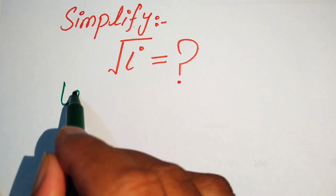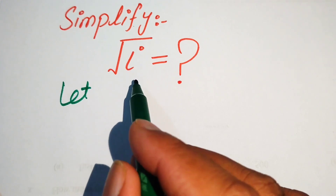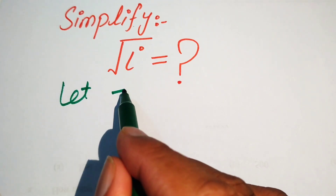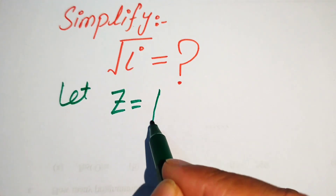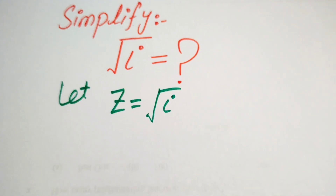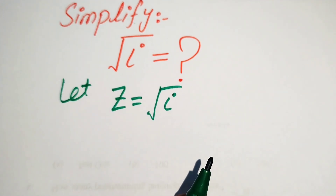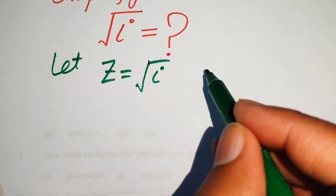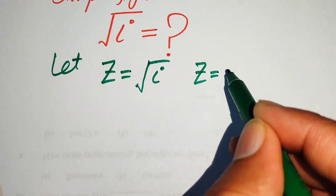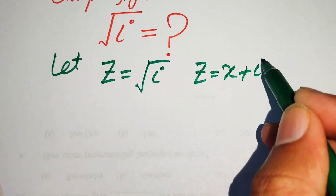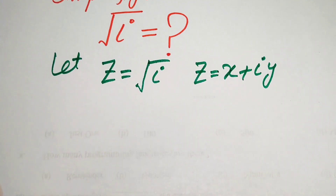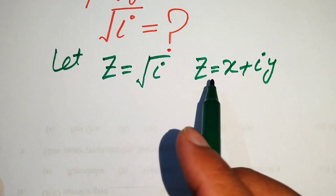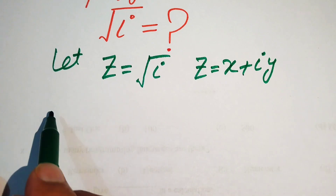The very first step is to suppose that the square root of iota equals z. We know that z is a complex number, so we suppose z equals x plus iota y.